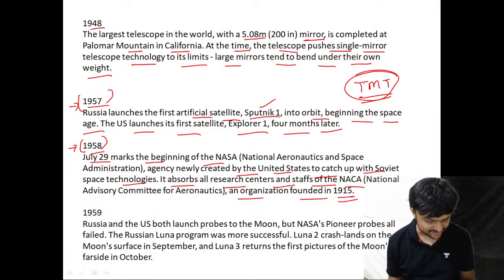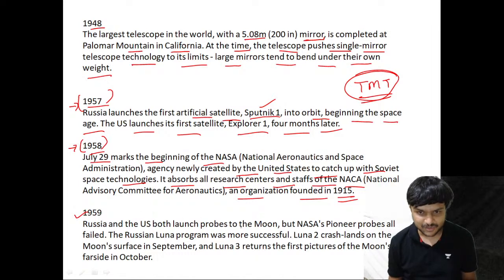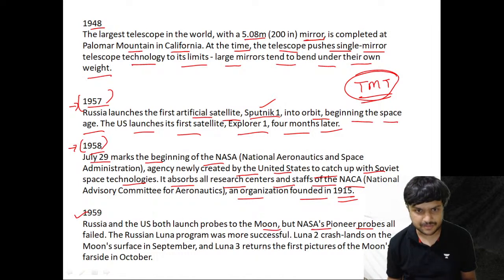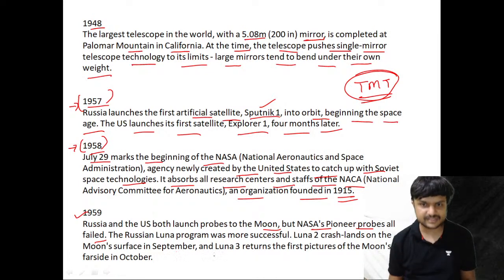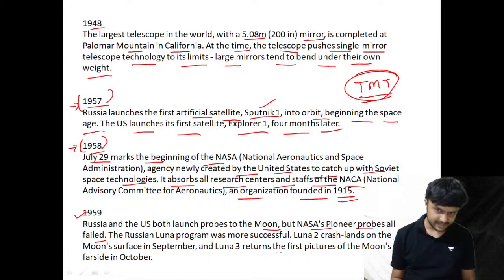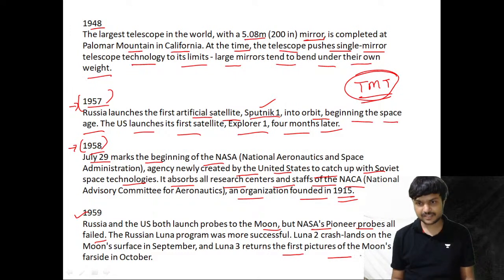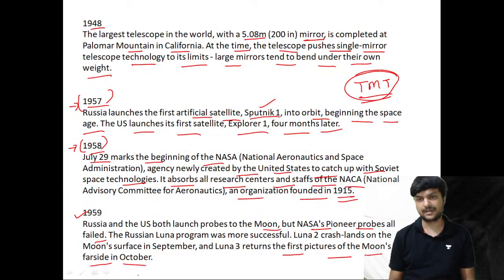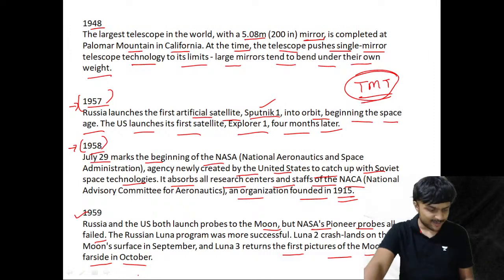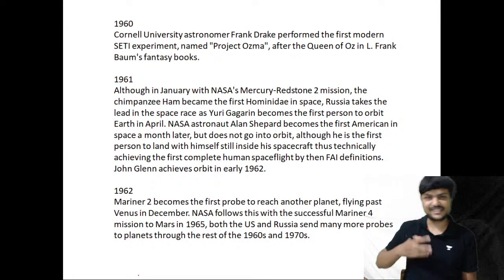In 1959, Russia and the US both launched probes to the Moon, but NASA's Pioneer probes all failed. The Russian Luna program was more successful — Luna 2 crash-landed on the Moon's surface in September, and Luna 3 returned the first pictures of the Moon's far side in October. This is where the race to the Moon truly began.